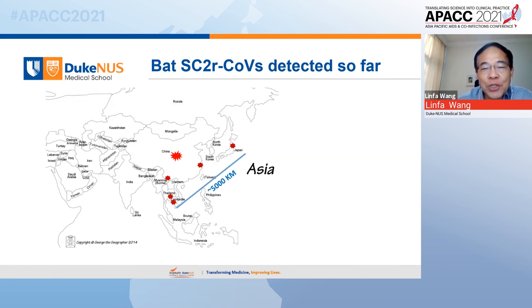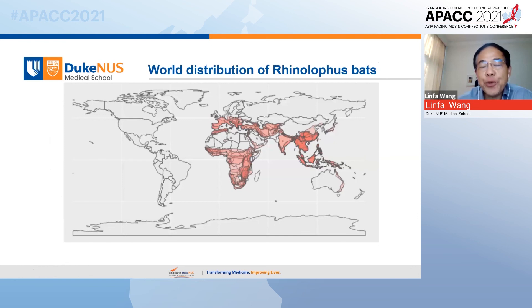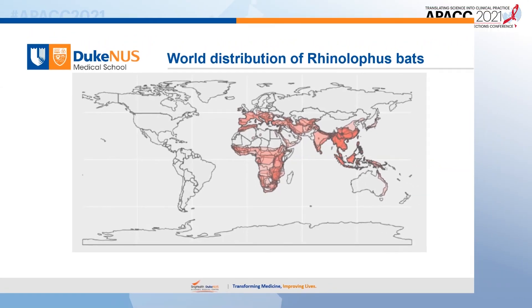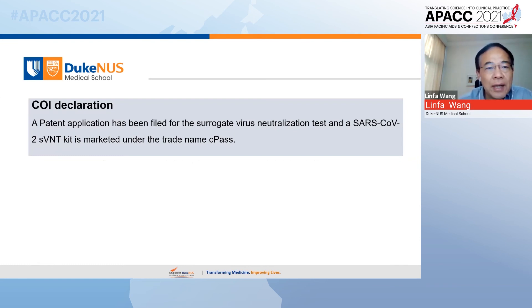In terms of the distribution of Rhinolophus bats — the bats known to carry SARS-related coronaviruses — they are distributed across a very wide geographic range, from the east coast of Australia all the way through Asia, the Middle East, Europe, and Sub-Saharan Africa. We have to keep an open mind in the search for the origin of SARS-CoV-2, because in theory any geographic location where bats carry similar viruses could be the origin. I need to declare a conflict of interest: we have a patent on the surrogate virus neutralization test, and the kit is already being marketed under the trade name cPASS. Thank you for your attention.